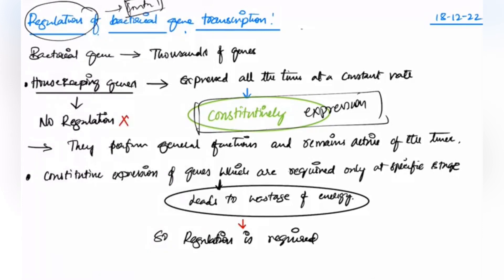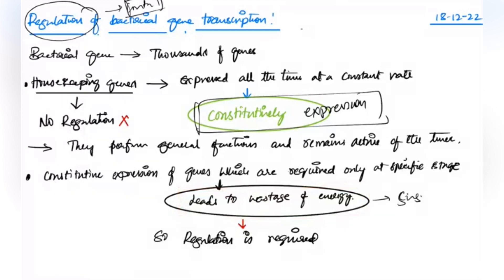Regulation is only needed for genes that are not required all the time — only at specific stages of life. If such genes were expressed all the time, the major loss would be wastage of energy, mainly the sugar source from which bacteria derive energy, such as glucose. This is why regulation is required: if a gene is only needed at a specific stage, it should be expressed only then and controlled at all other stages.